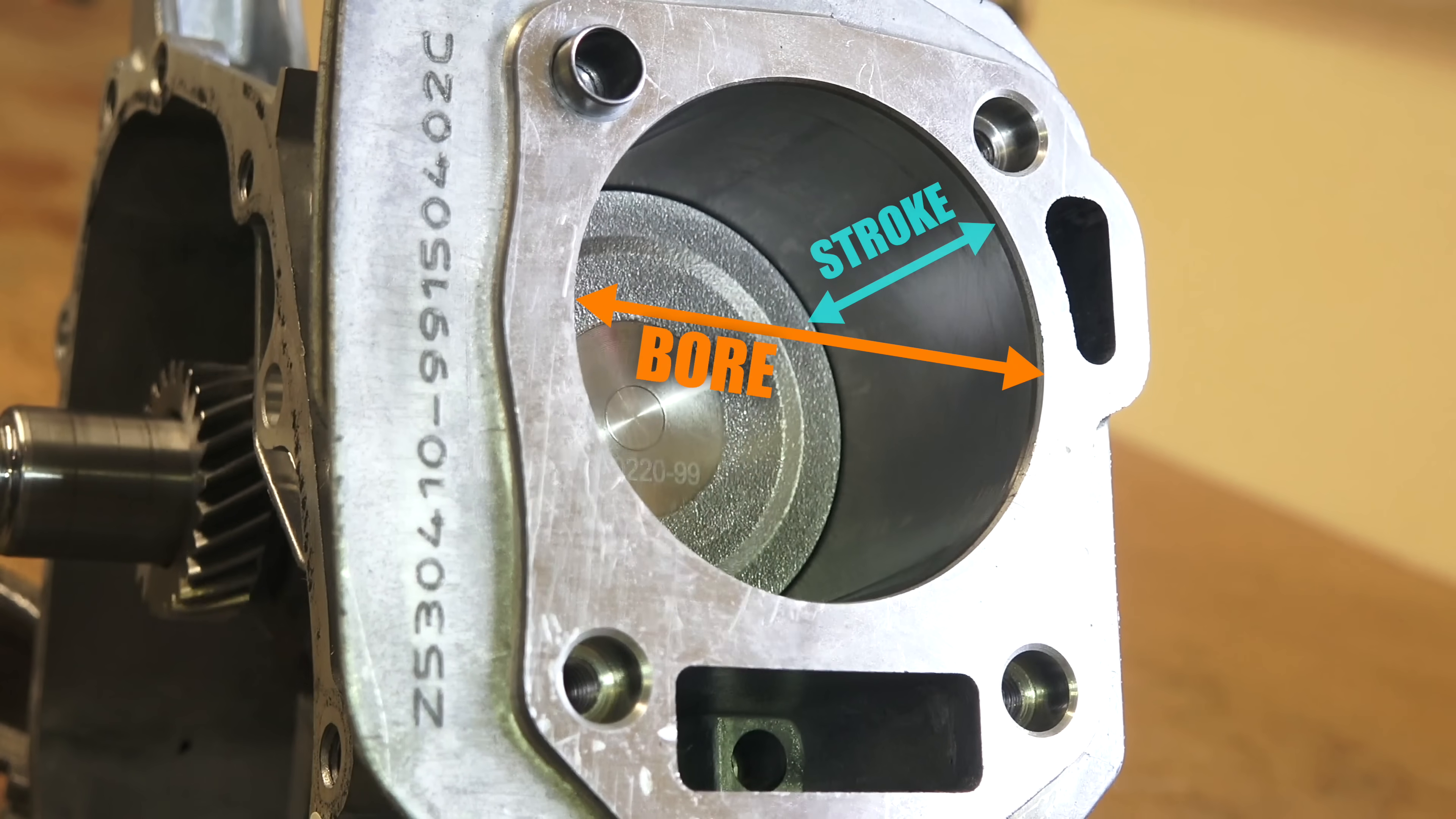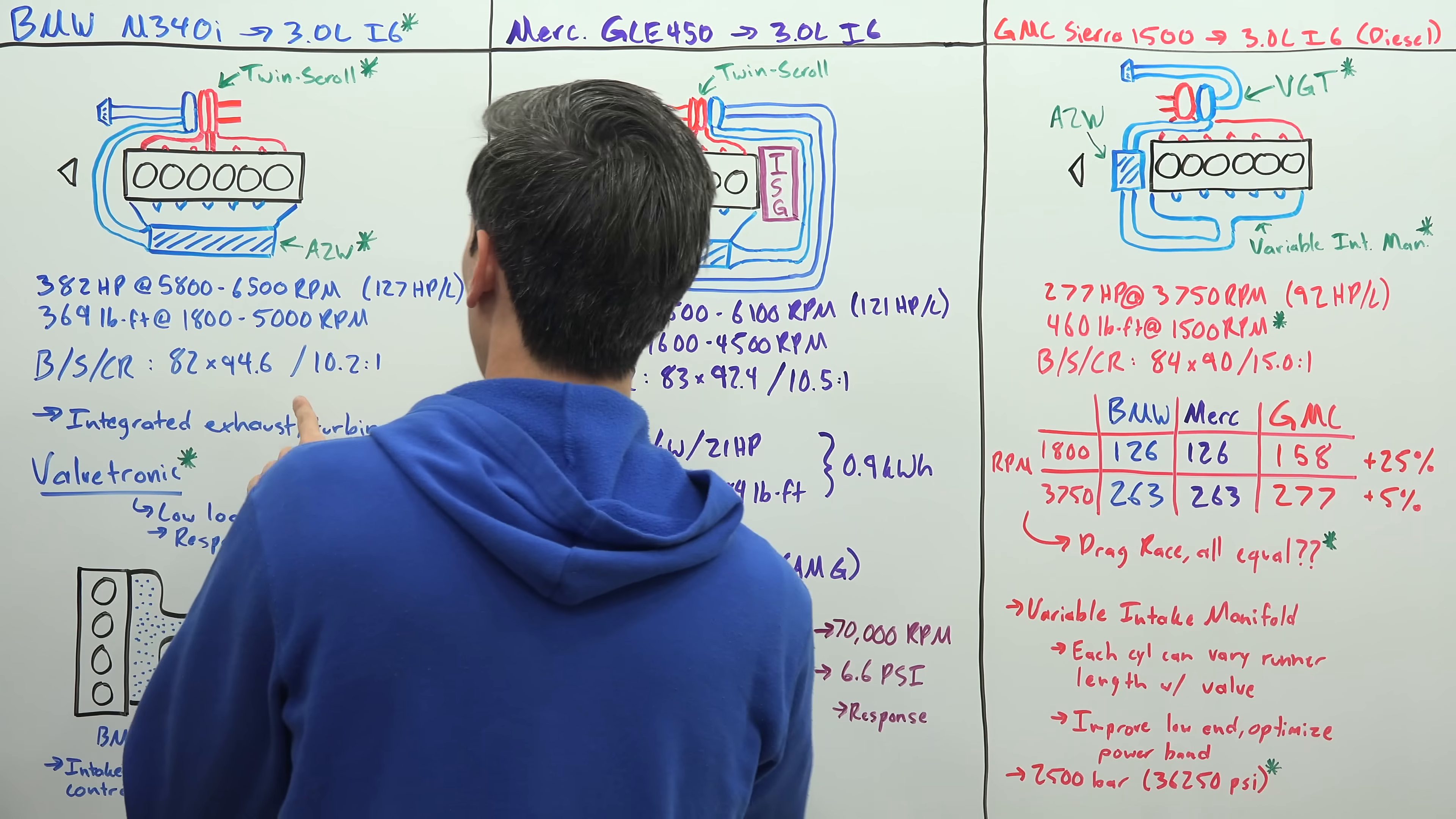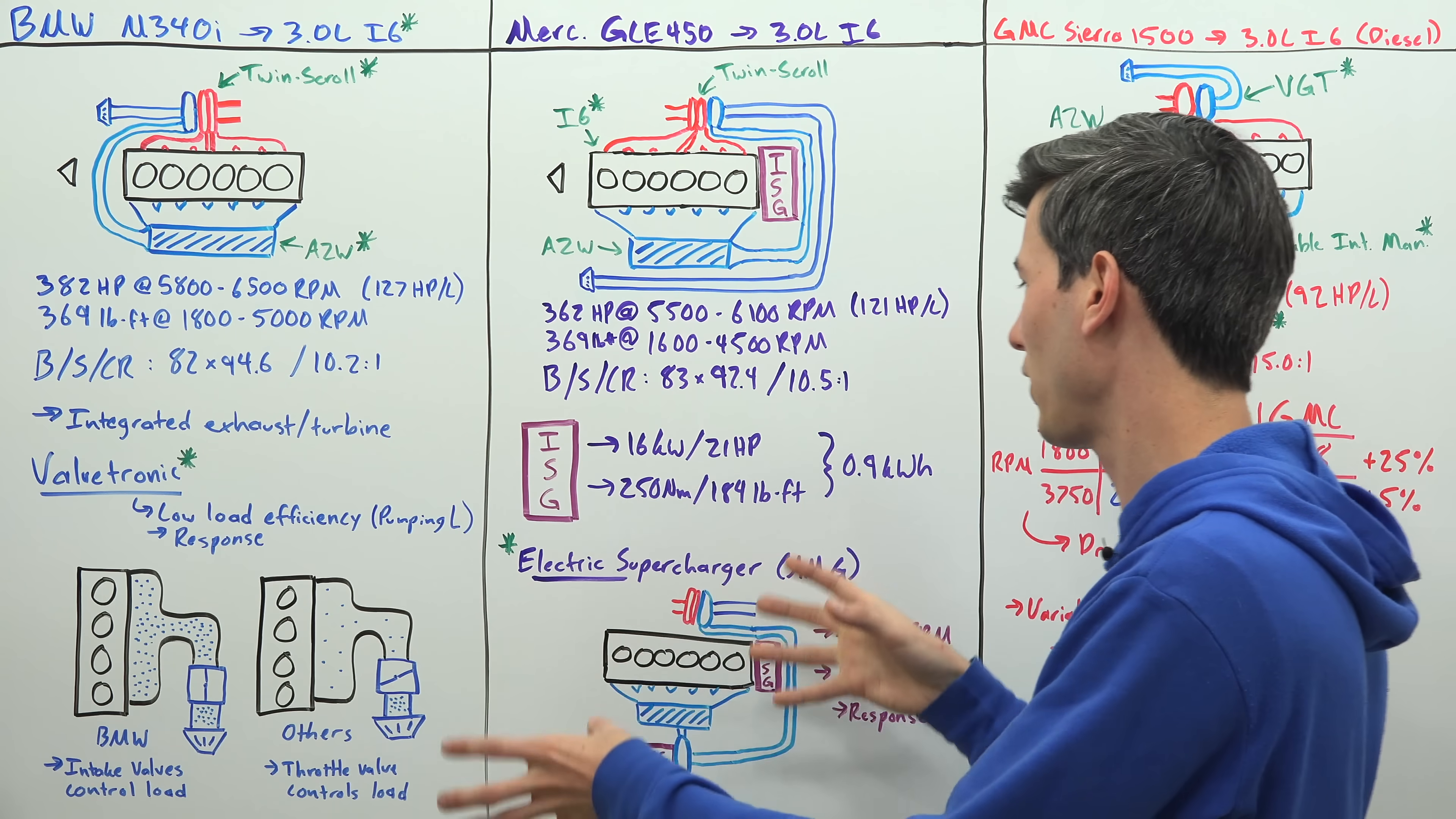How about bore, stroke, and compression ratio? Of course the diesel is going to have the highest compression ratio, 15 to 1, it's a compression ignition engine versus the spark ignited engines, 10.5 in the Mercedes and 10.2 in the BMW. Interestingly the diesel has the shortest stroke: 84 millimeter bore, 90 millimeter stroke versus the 92 millimeter stroke in the Mercedes and 94.6 millimeter stroke in the BMW.